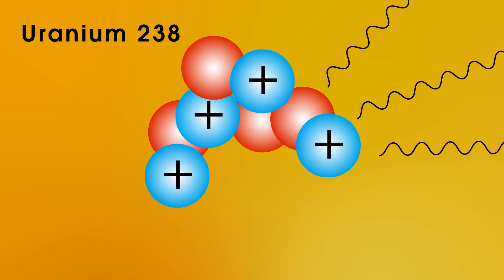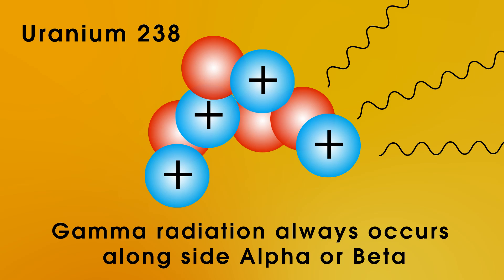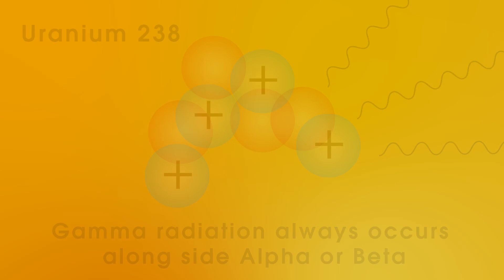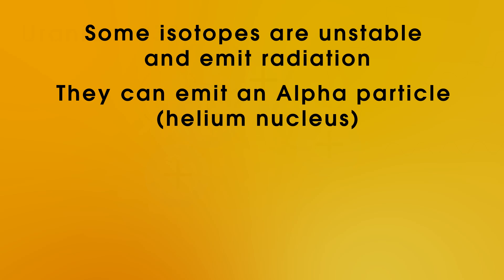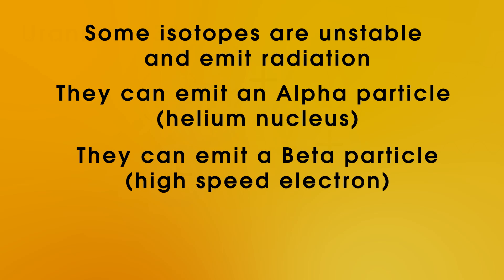Now, gamma radiation always occurs alongside alpha or beta, and not on its own. To recap, some isotopes are unstable and emit radiation. We call them radioactive. In order to make themselves stable, they can do three things. They can emit an alpha particle, which is the same as a helium nucleus. They can emit a beta particle, which is a high-speed electron, and they can also emit a burst of electromagnetic radiation or gamma radiation.